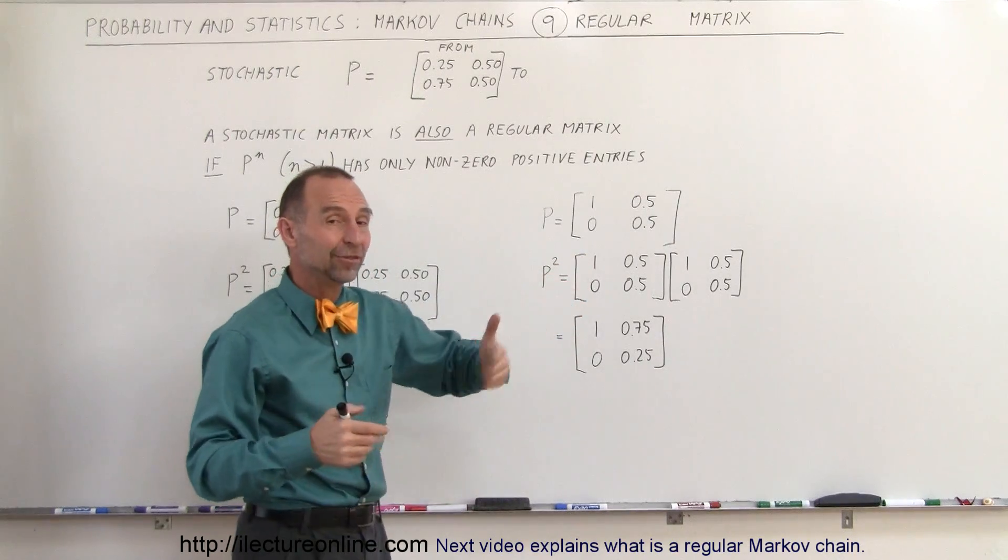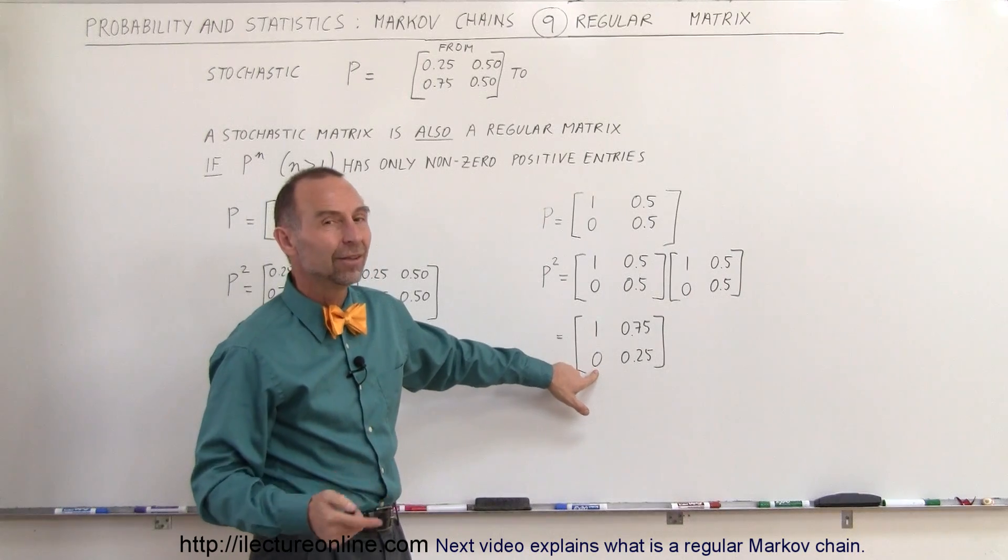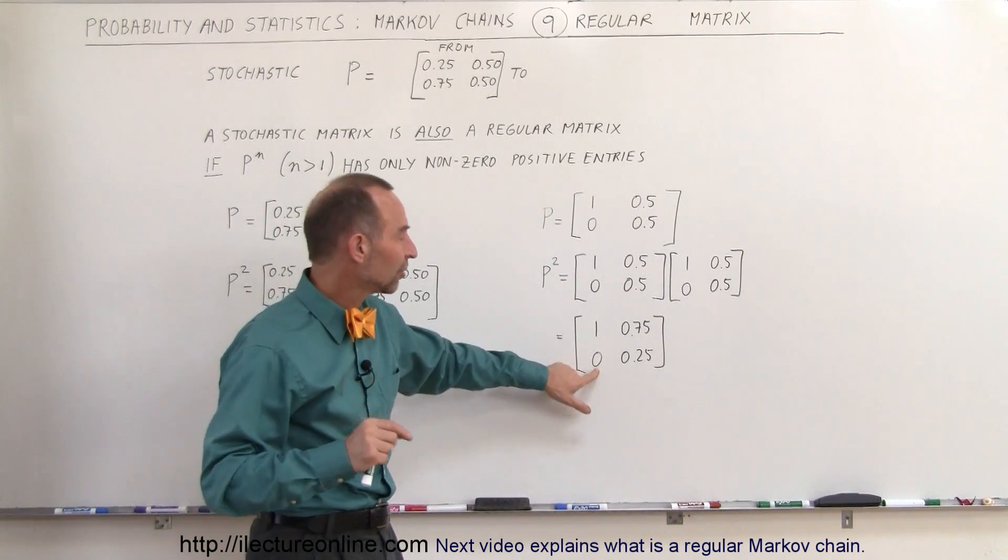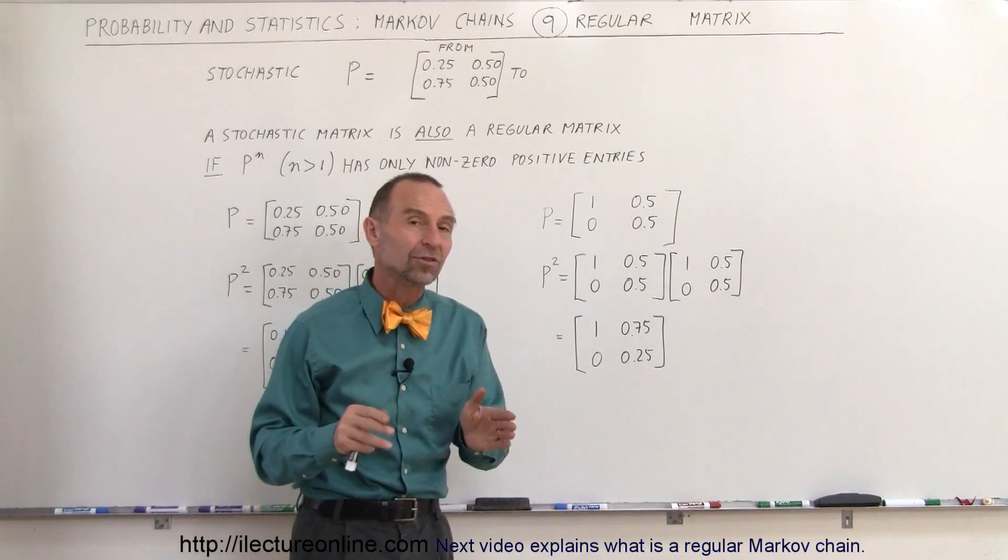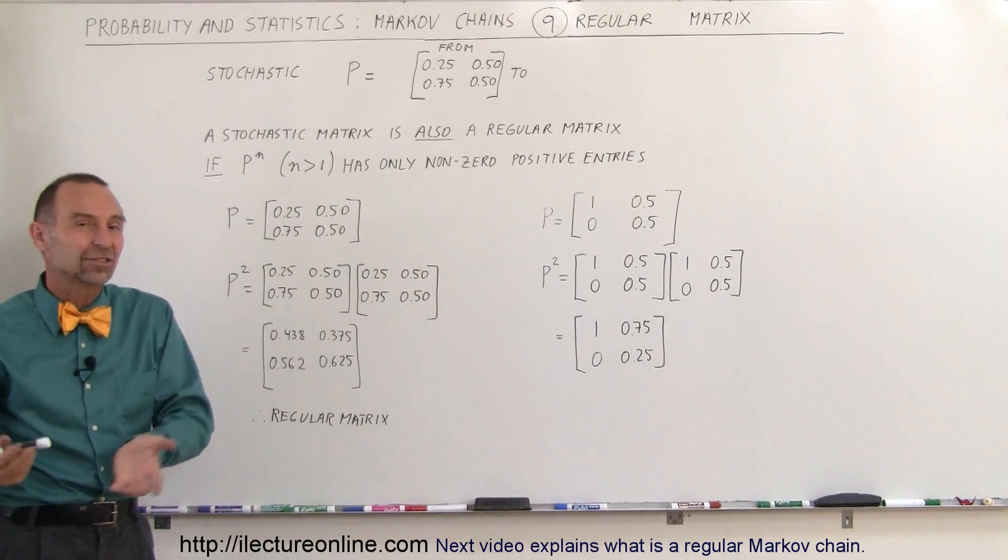Well if I multiply by itself so I get P to the second power, notice I end up with a zero element in there. Since that is not allowed for regular matrix, this is therefore not a regular matrix and cannot be properly used in what we call a Markov chain exercise.